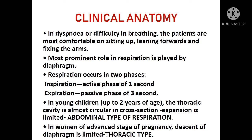Clinically, in dyspneic patients with difficulty breathing due to lung pathology, they are more comfortable sitting up, leaning forward, and fixing the arms — this pushes the diaphragm slightly downward, aiding comfort. The most prominent role in respiration is played by the diaphragm. Respiration occurs in two phases: inspiration is the active phase of one second, and expiration is the passive phase of three seconds. In young children, the thoracic cavity is almost circular in cross section, so expansion is limited — this is called abdominal type of respiration. In women in advanced stages of pregnancy, the descent of the diaphragm is limited — this is called the thoracic type of respiration.